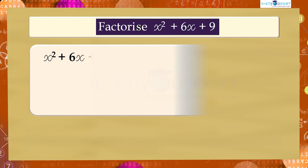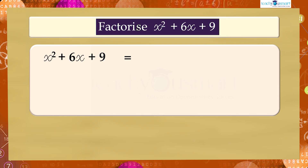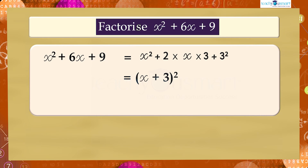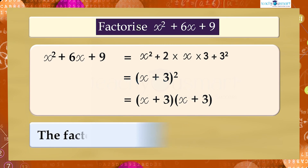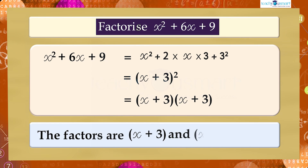Therefore, x² + 6x + 9 = x² + 2 × x × 3 + 3² = (x + 3)², or (x + 3)(x + 3). Therefore the factors are (x + 3) and (x + 3).